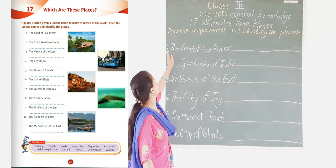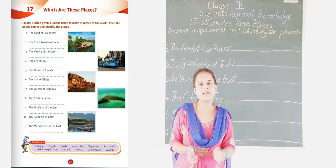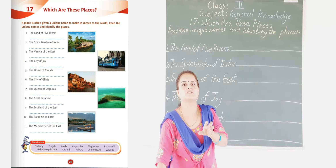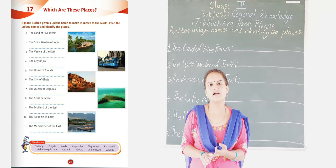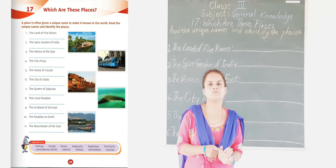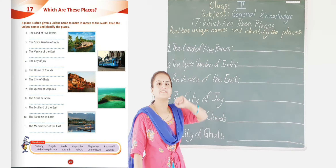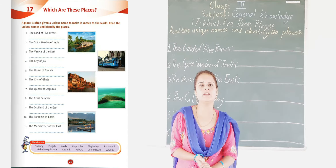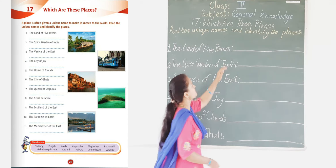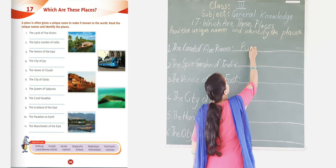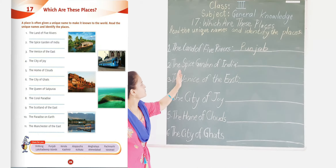The first one is the Land of the Five Rivers. This place has five rivers together. It is a state of India. That state is Punjab. So the Land of Five Rivers is Punjab.